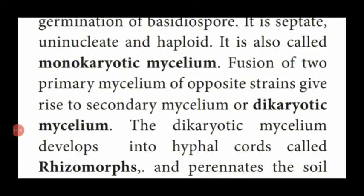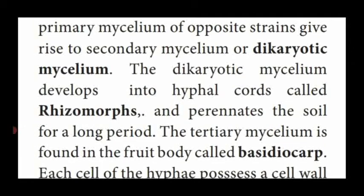This dikaryotic mycelium develops into a small cord-like structure in the hyphal region named rhizomorph. So the secondary or dikaryotic mycelium develops into a hyphal cord named rhizomorph, which acts like the rhizoids present in Mucor fungi.